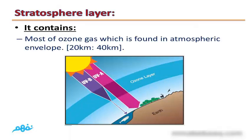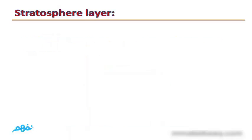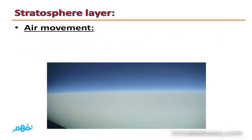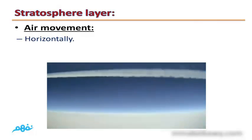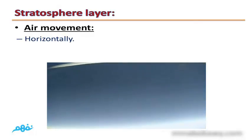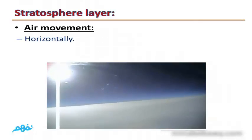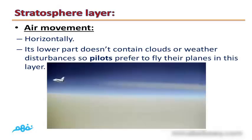The Stratosphere contains most of the ozone gases, found in the atmospheric envelope between heights of 20 km to 40 km. Air moves horizontally in this layer.